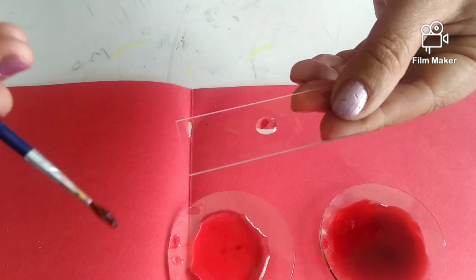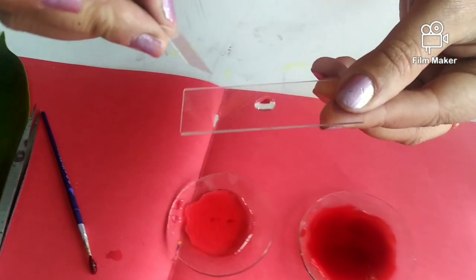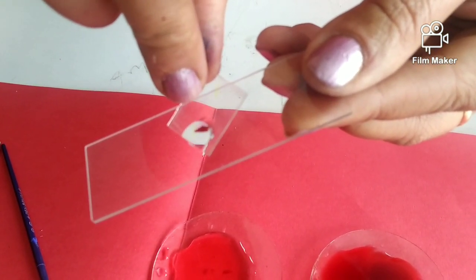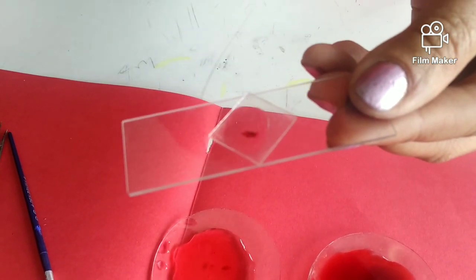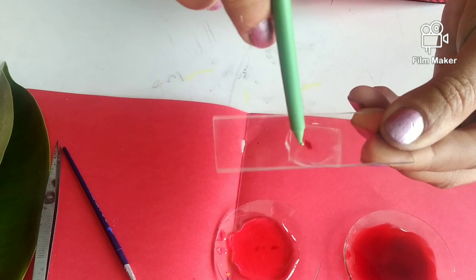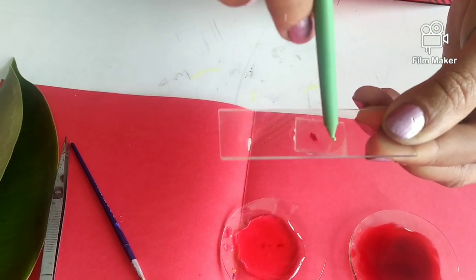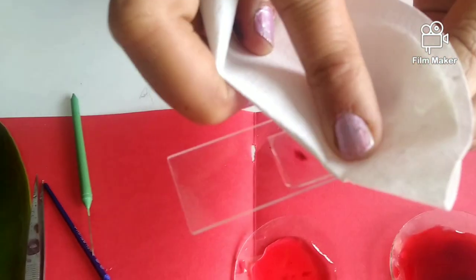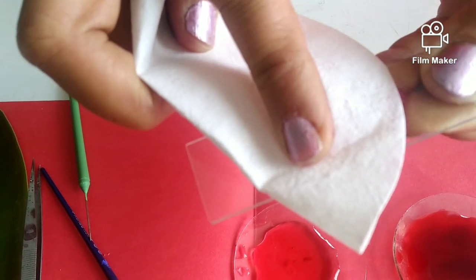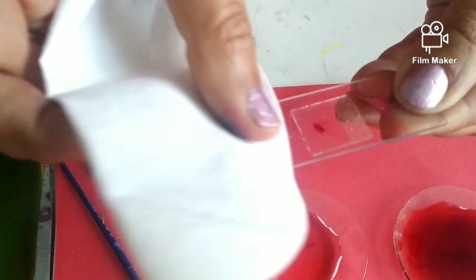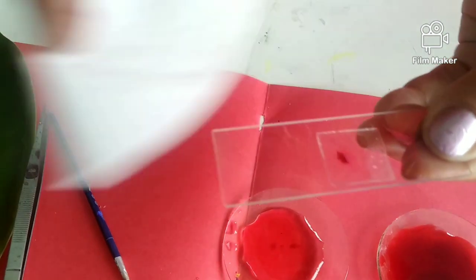Now place it over the glycerin on the slide. We will put a clear cover slip over it gently using a needle. Sometimes air bubbles can enter, so the cover slip needs to be placed in such a way that air bubbles are avoided. Excess glycerin and stain can be removed using blotting paper. This will absorb the extra stain as well as the glycerin.